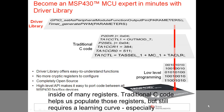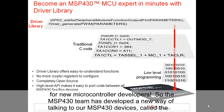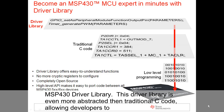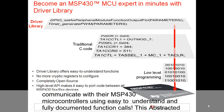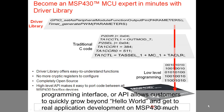Each peripheral module inside of the microcontroller is defined and controlled through ones and zeros inside of many registers. Traditional C code helps us to populate those registers, but still requires a learning curve, especially for new microcontroller developers. So the MSP430 team has developed a new way of talking to our MSP430 devices called the MSP430 Driver Library. This Driver Library is even more abstracted than traditional C code, allowing developers to communicate with their MSP430 microcontrollers using easy to understand and fully documented function calls. This abstracted programming interface, or API, allows customers to quickly grow beyond Hello World and get to real application development on MSP430 much more quickly.